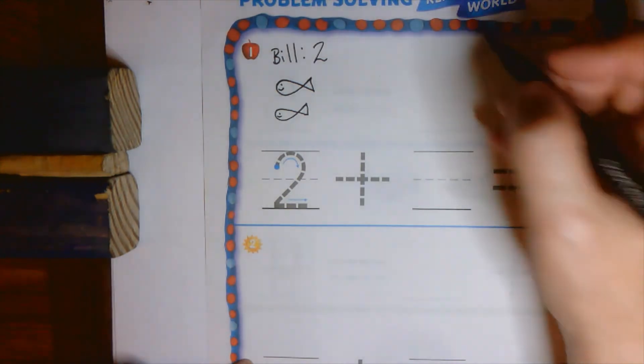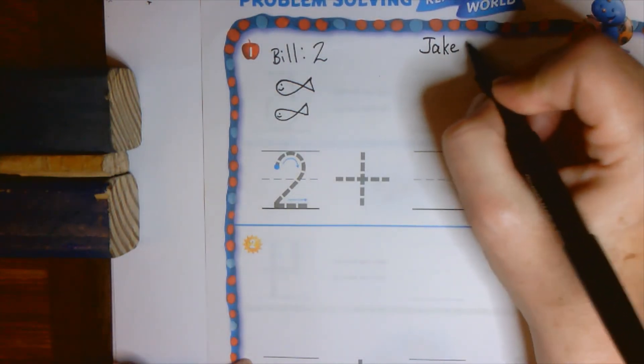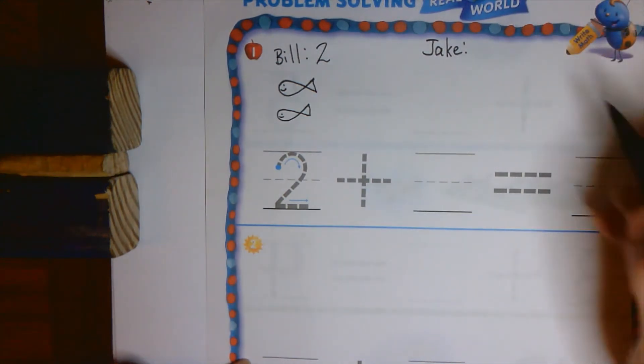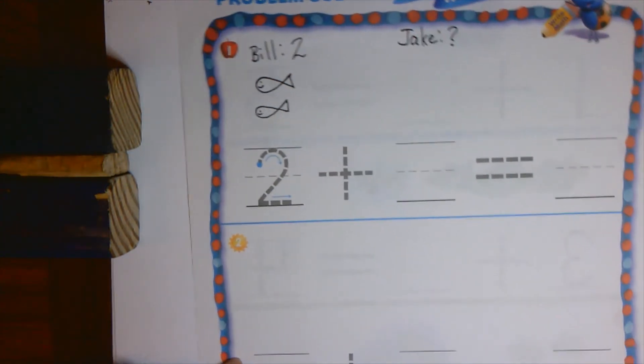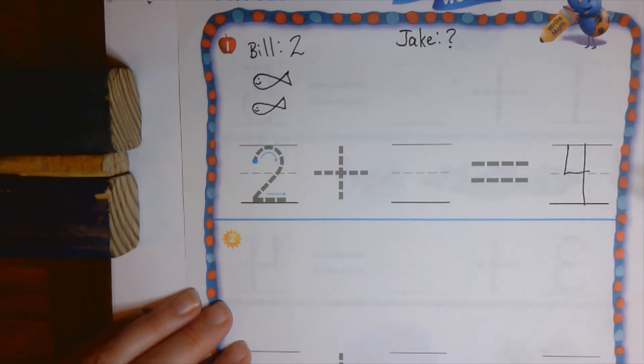Now, Jake is also fishing with Bill. Here is Jake. We do not know how many fish he catches. Do you see my question mark here that says we don't know?